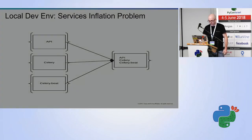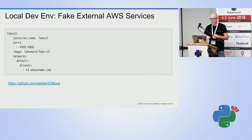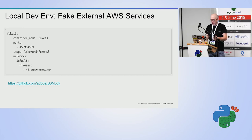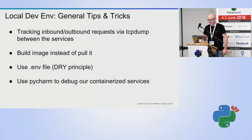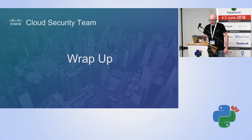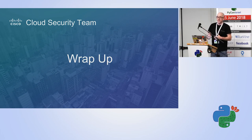A best practice when working locally: you want to stay local and not reach out to external services. Since we use a lot of AWS services, we just fake them. For S3 we experimented with different solutions and eventually chose fake-s3, which is a solution for Python. To wrap up — there are many different ways to tackle what we've discussed here. We hope this talk gave you some ideas. Our project is still evolving, and that's it.